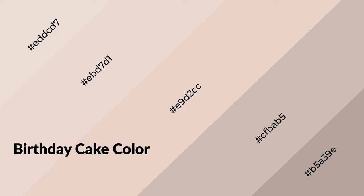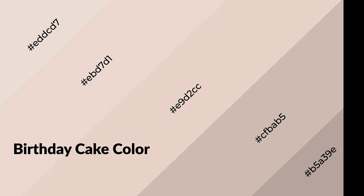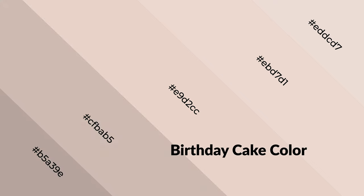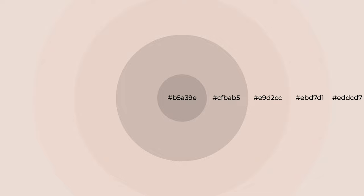Birthday cake is a warm color and it emits cozier and active emotions. Warm colors are symbols of warmth, fire, heat, and sunshine. They also evoke joy, passion, love, and even anger. You can see them used in restaurants and gyms.